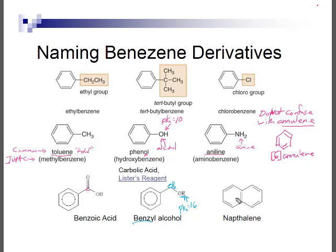Naphthalene has two rings fused together. Toluene, phenol, aniline, and naphthalene all have very characteristic and strong odors. Benzoic acid, a solid, doesn't really have an odor. Phenol smells a bit like Chloraseptic throat spray, since phenol is an antiseptic found in it. Aniline, like many amines, has a pungent ammonia-like stench. Naphthalene has a pronounced odor and is used to chase away moths and rodents — it's the compound in mothballs or moth flakes.